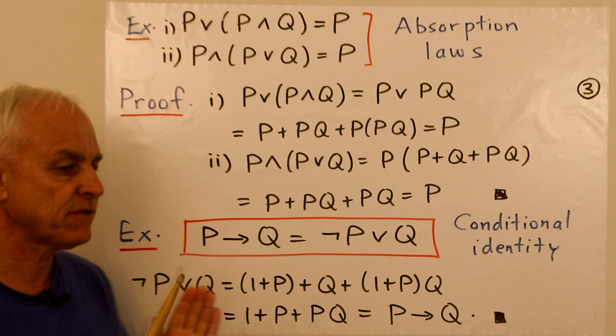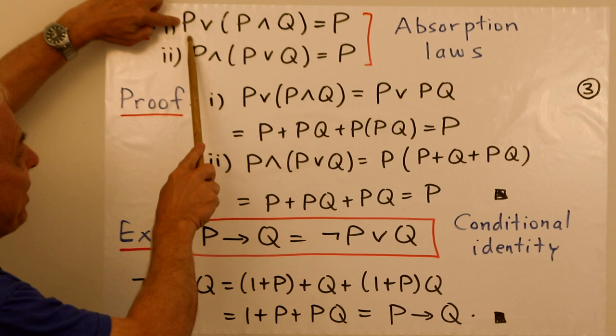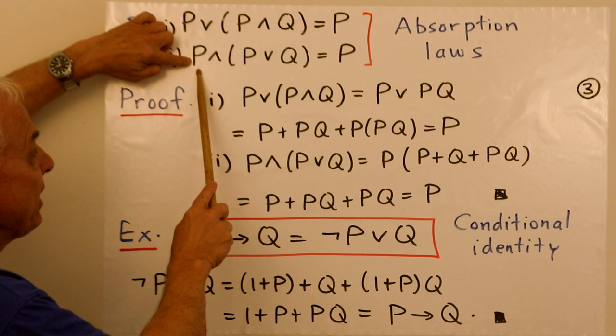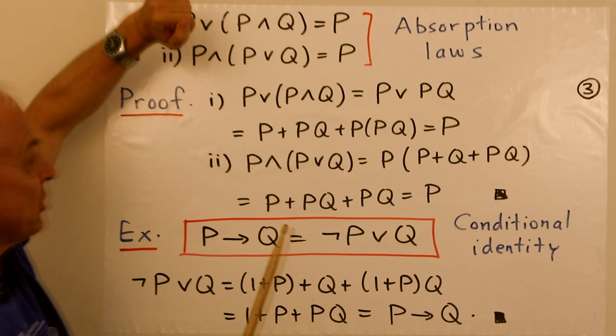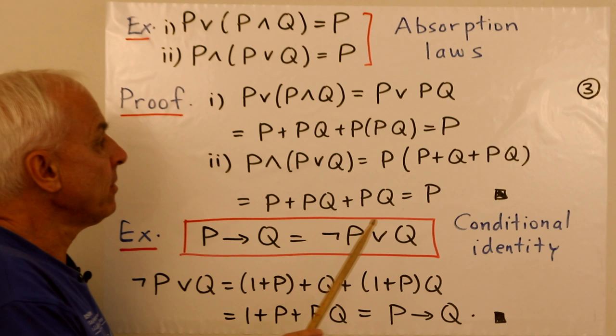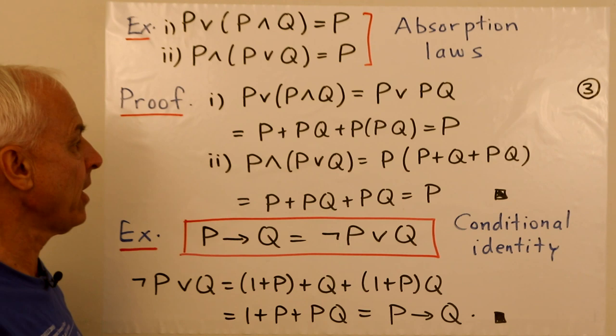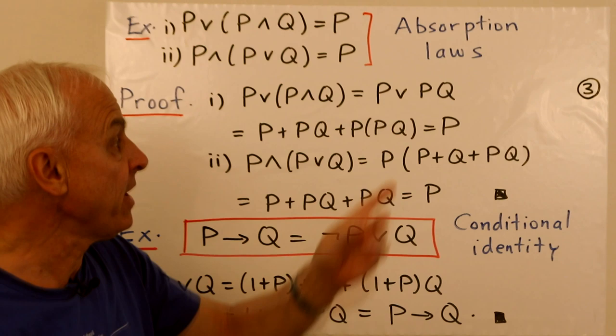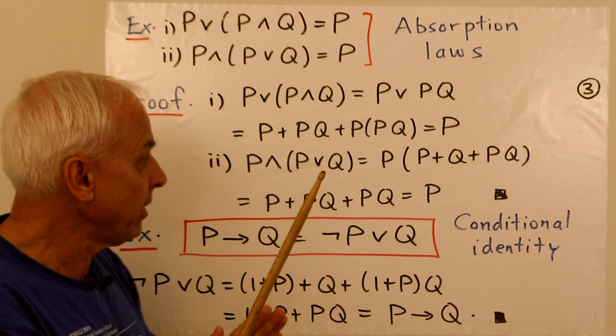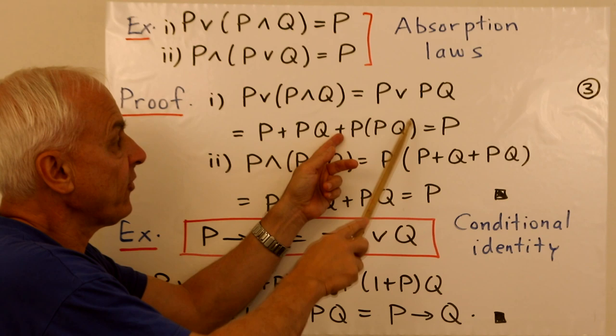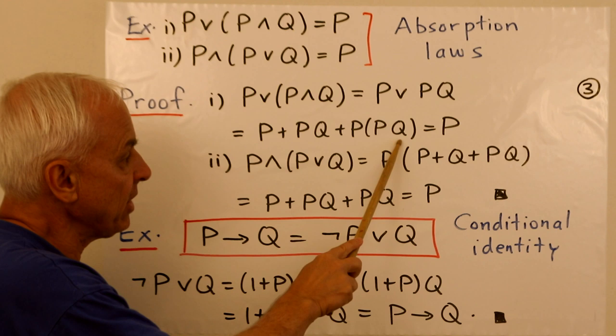Starting with the absorption laws. The first one is: p∨(p∧q) equals p. The second is: p∧(p∨q) equals p. For the first one, p∨(p∧q) is p∨pq. The or is represented as p plus pq plus p·pq. But p·pq is also pq, so it cancels with the pq term, and we just get p. That proves the first absorption law.